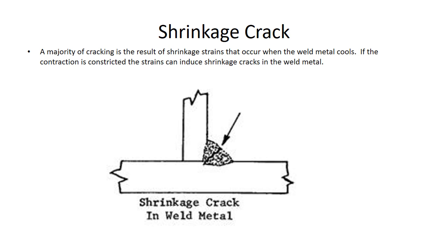Here we have a shrinkage crack. The majority of cracking is the result of shrinkage strains that occur when the weld metal cools. If the contraction is constricted, the strain can induce shrinkage cracks in the weld metal. This is a fillet weld with a shrinkage crack in the weld metal — maybe it was too restrained, maybe the weld was too large, or maybe it was too cold.